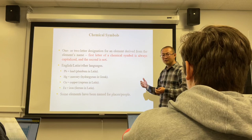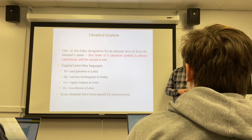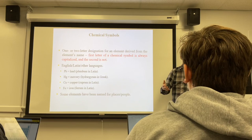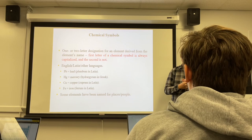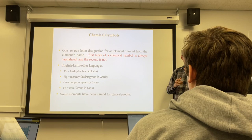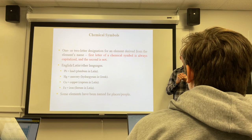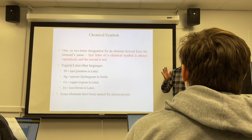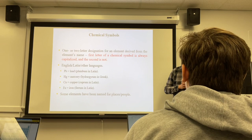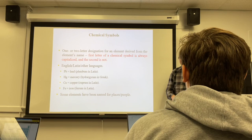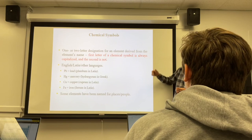Elements in the periodic table are listed by their symbols, not their names. A symbol for an element is either one letter or a two-letter combination. If it's one letter, it must be capitalized. If it's two letters, the first is capitalized and the second is lowercase. There is no single element with two capital letters — two capital letters means two elements.